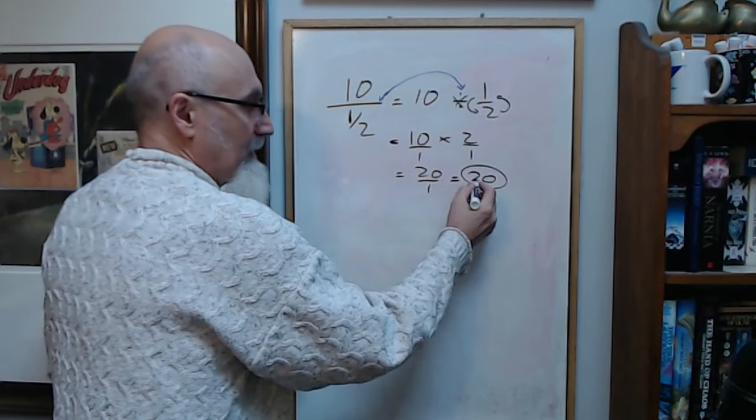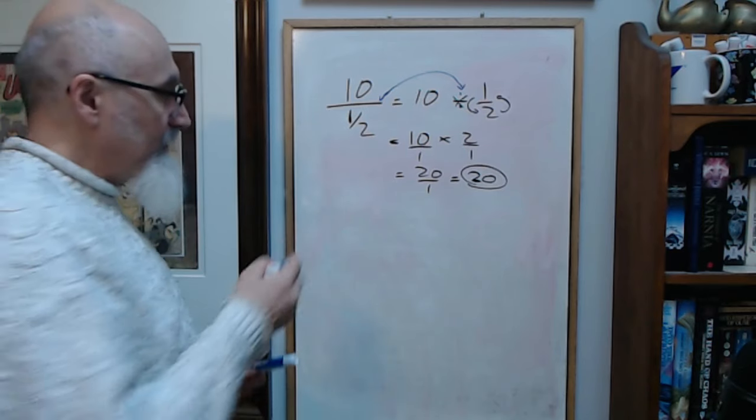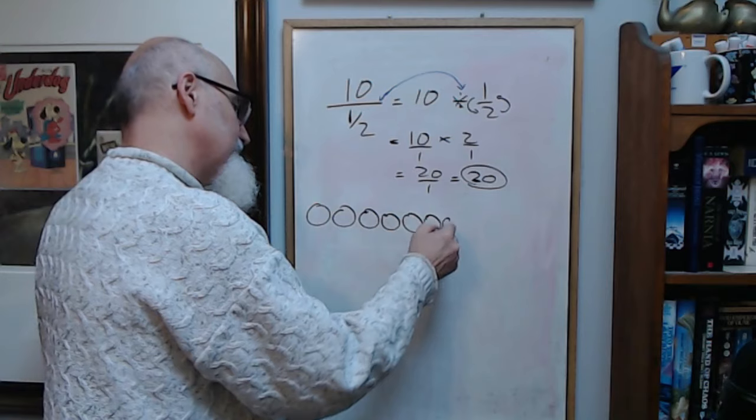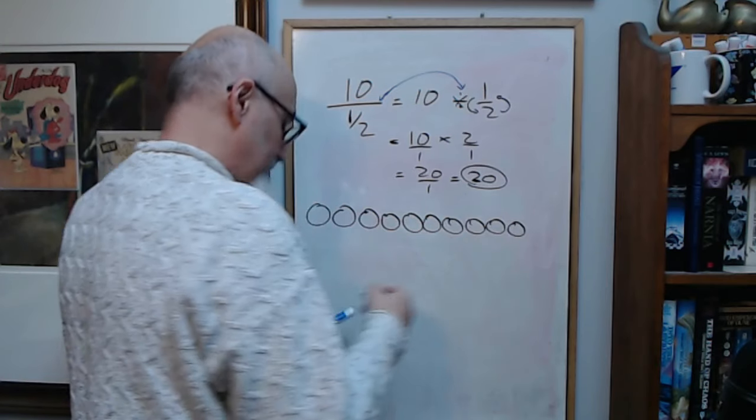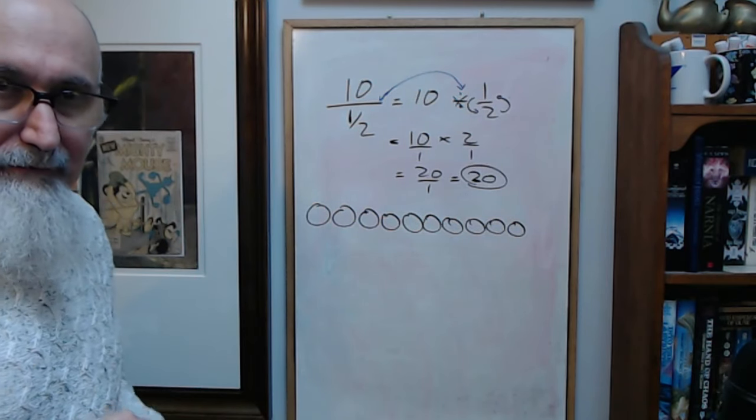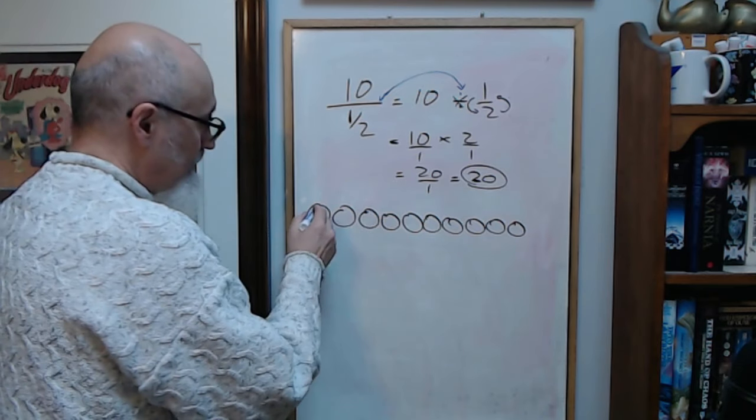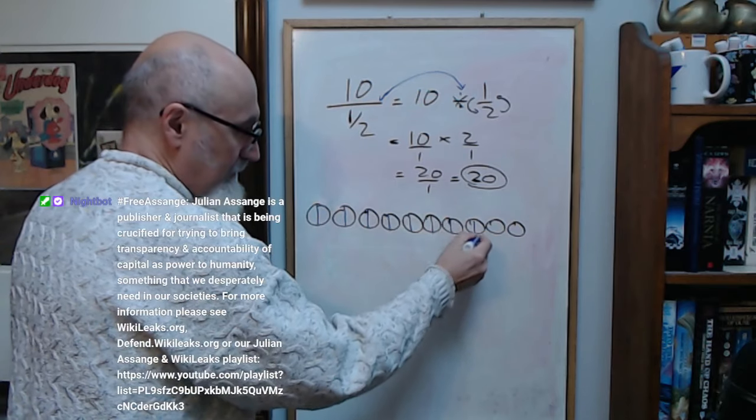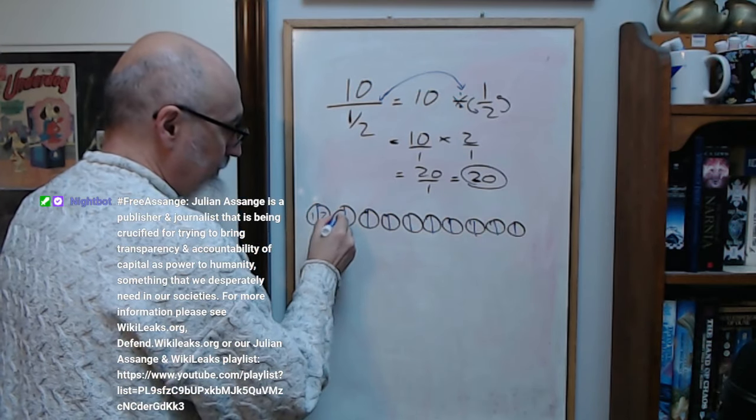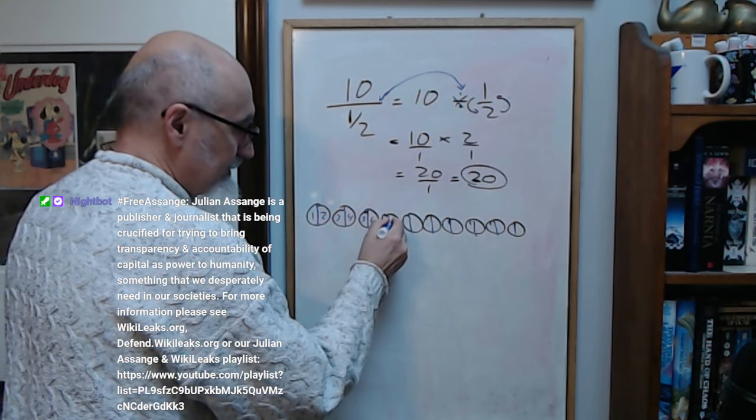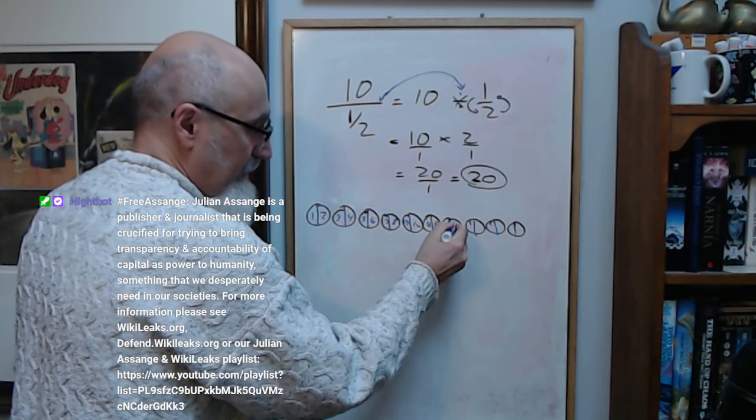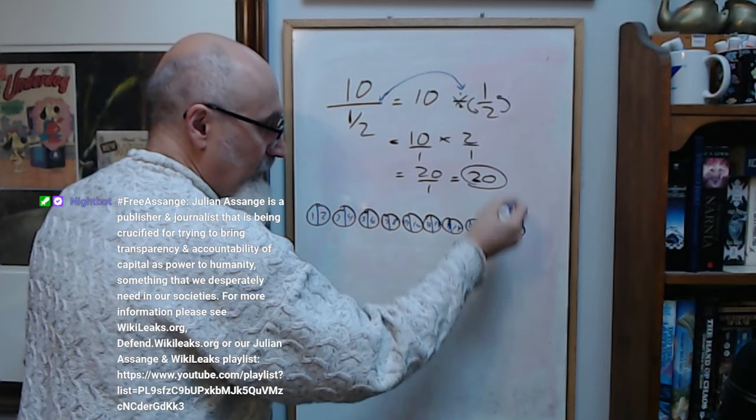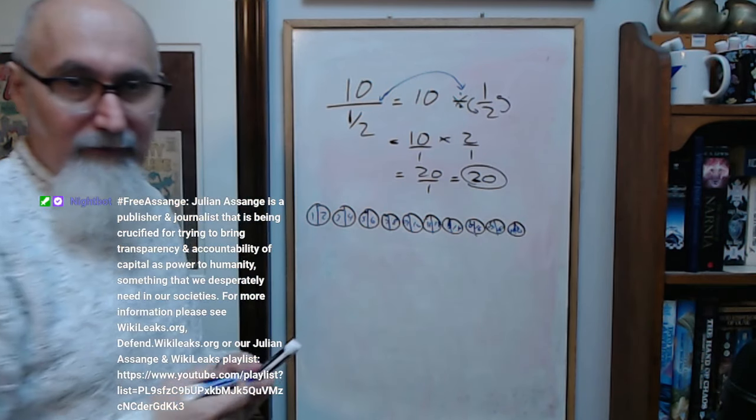You get twenty half pieces out of it. Now if you want to think about it, here's ten apples: one, two, three, four, five, six, seven, eight, nine, ten. Well, we're gonna divide each one by half: one, two, three, four, five, six, seven, eight, nine, ten, eleven, twelve, thirteen, fourteen, fifteen, sixteen, seventeen, eighteen, nineteen, twenty. You have twenty half pieces.